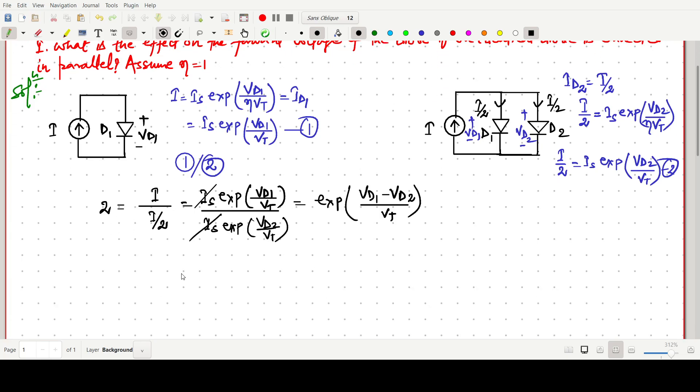This one, if we divide, it will be simply 2. So the expression will be exp VD1 minus VD2 by VT equals to 2. We can write VD1 minus VD2 divided by VT equals to ln of 2. The change in difference in the forward drop voltages, VD1 minus VD2, will be VT times ln 2.